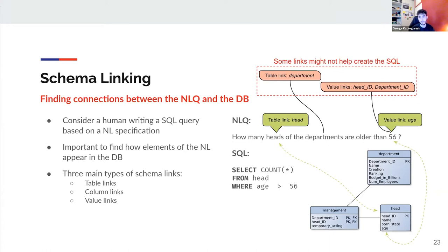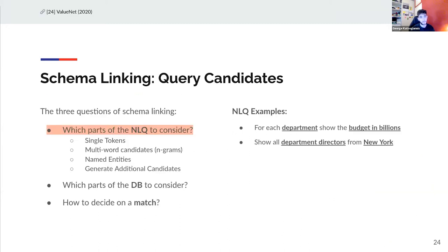In this example, the number 56 is a value link to the column 'age' in the table 'head.' We also see words like 'departments' that could be a table link to the table 'department,' but this schema link does not help us create the correct SQL query. It is not enough to only find schema links — we must create a system that understands which schema links are useful and important to generate the correct SQL.